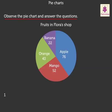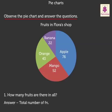Now observe this pie chart and answer the questions. Question one: how many fruits are there in all? We find the total number of fruits: 76 plus 52 plus 43 plus 22, which is equal to 193. So we say there are 193 fruits in all.